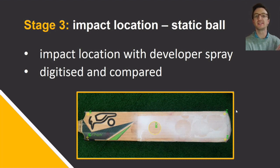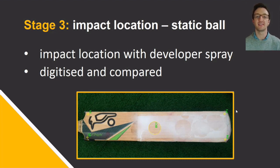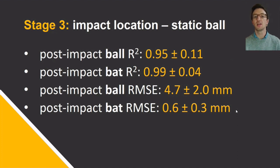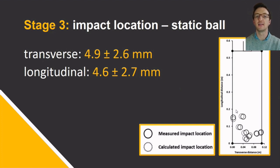We then added a bat, hitting the ball off a tee to look at impact location calculation for a static ball. Just as with stencilling for badminton, we covered the cricket bat in developer spray that left a circular mark once the ball had been hit, which could then be digitised and compared to our calculated impact location. The curves fit well with average root mean squared errors of less than half a centimetre, and differences between digitised and calculated impact locations were again less than half a centimetre on average.